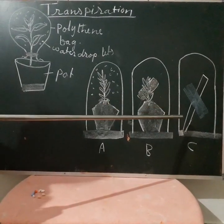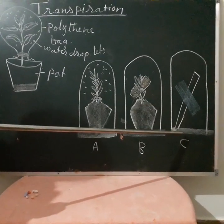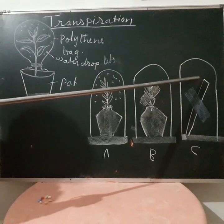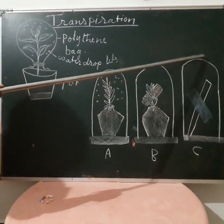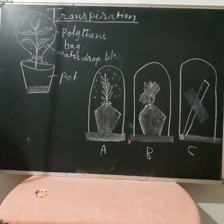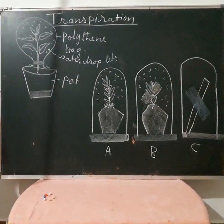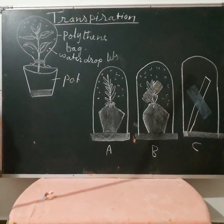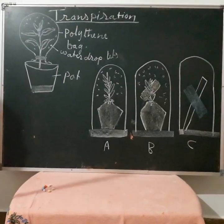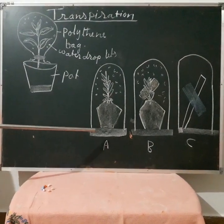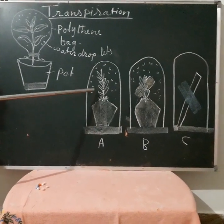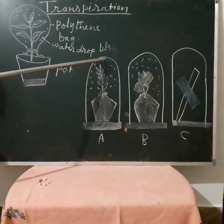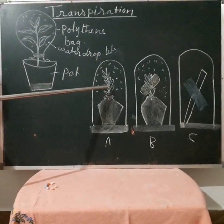The next experiment is done without a plant — a cobalt chloride paper is kept with support but without a plant, and is covered with the bag. The whole setup is kept in sunlight. After about 30 minutes to one hour, in experiment A, droplets of water can be seen on the inner surface of the bag, which is water transpired through the leaves.